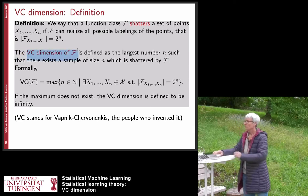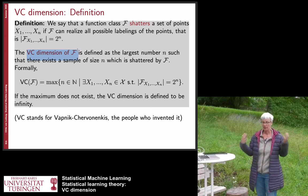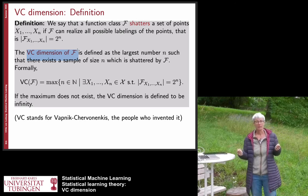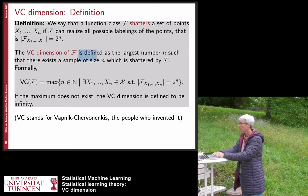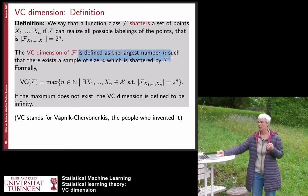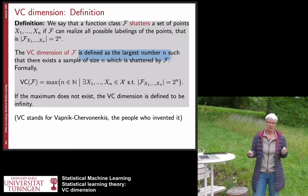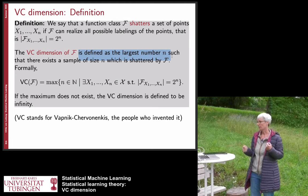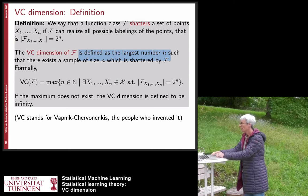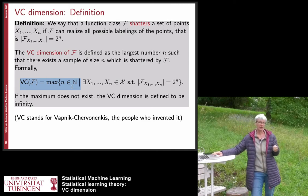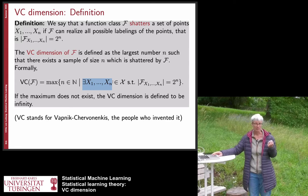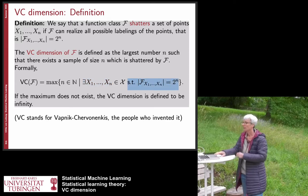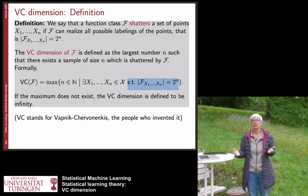Now we define what the VC dimension of a function class is. As opposed to the shattering coefficient, it is not a quantity that depends on n; it is a quantity that just depends on the function class. The VC dimension is defined as the largest number of data points such that there exists a sample of size n that can still be shattered by the function class — formally, the maximum integer n such that there exists a set of n data points whose labelings can all be realized.